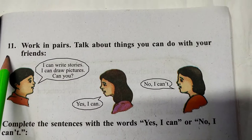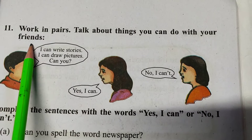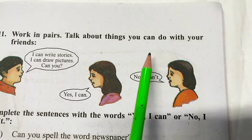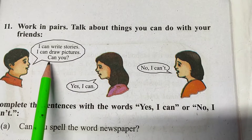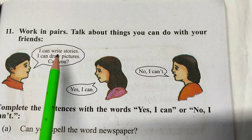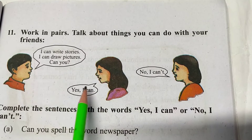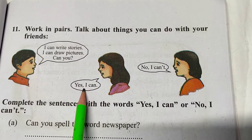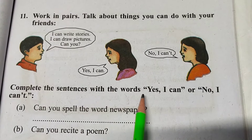Activity 11: Work in pairs. Talk about things you can do with your friends. I can write stories. I can draw pictures. Yes. Can you? I can write stories. I can draw pictures. Yes. I can.